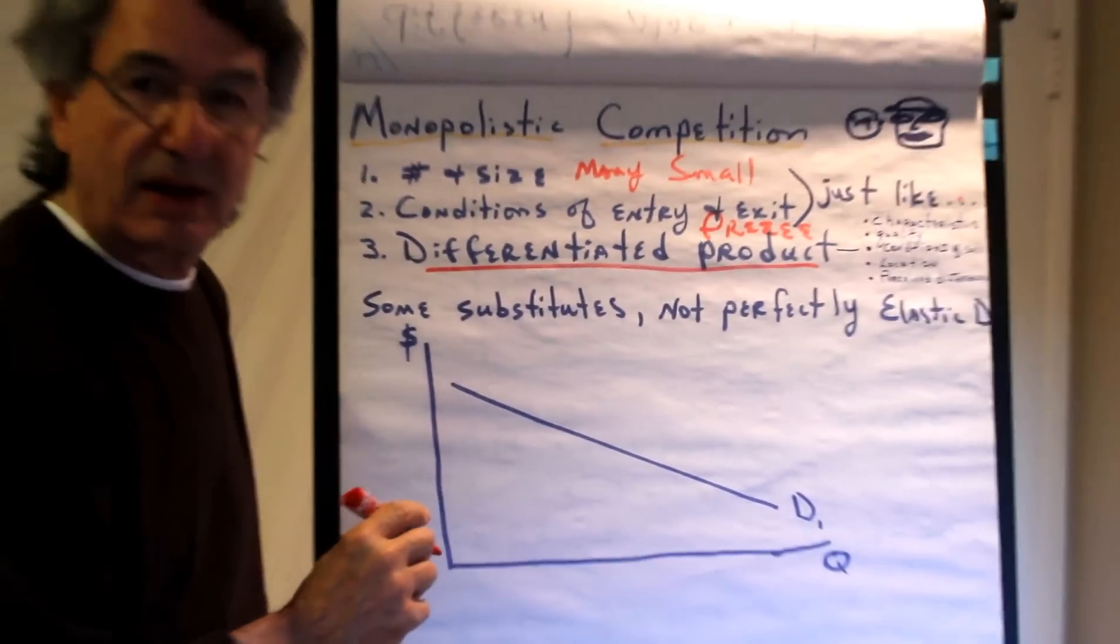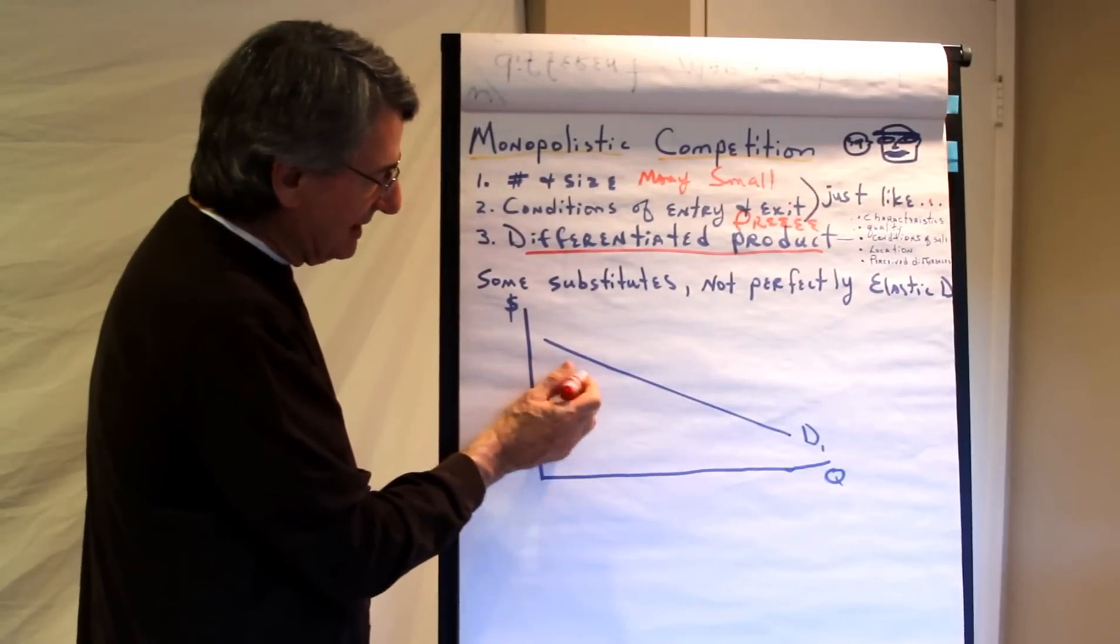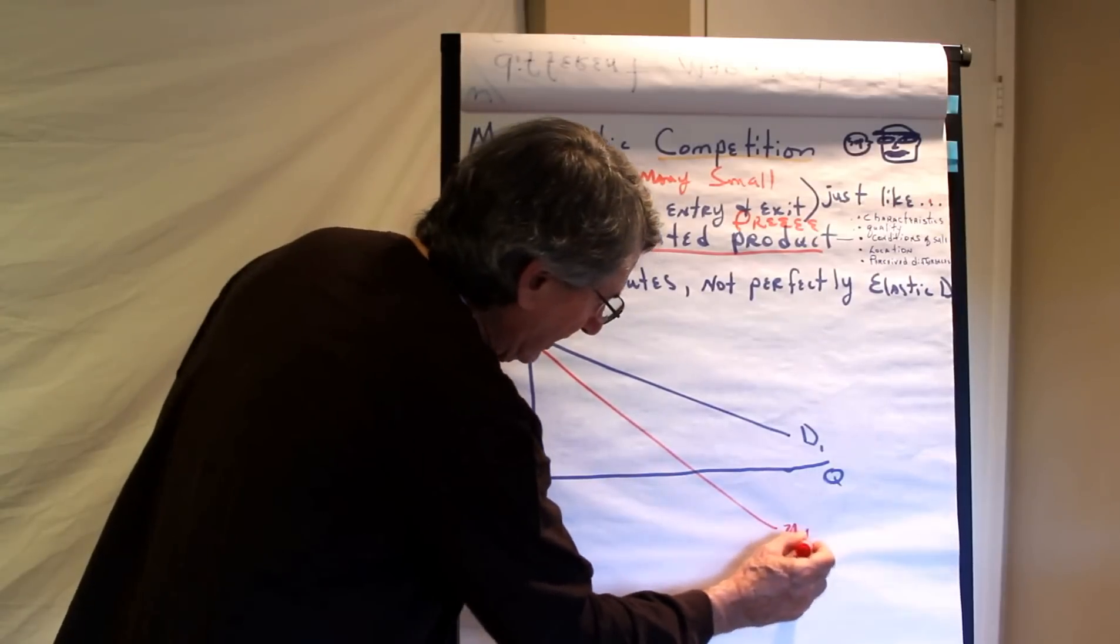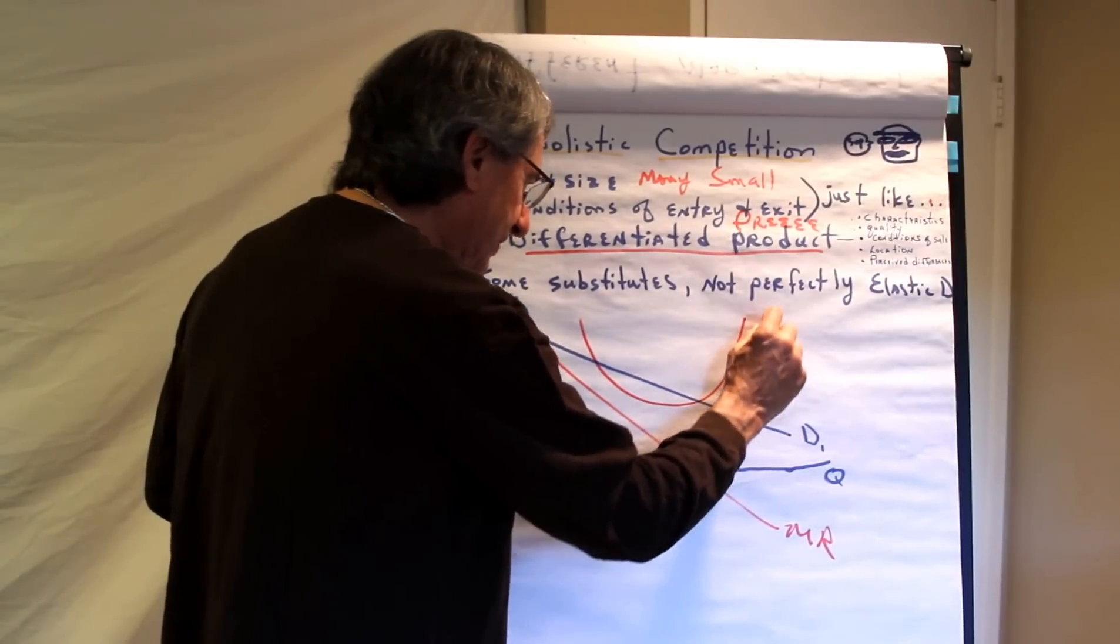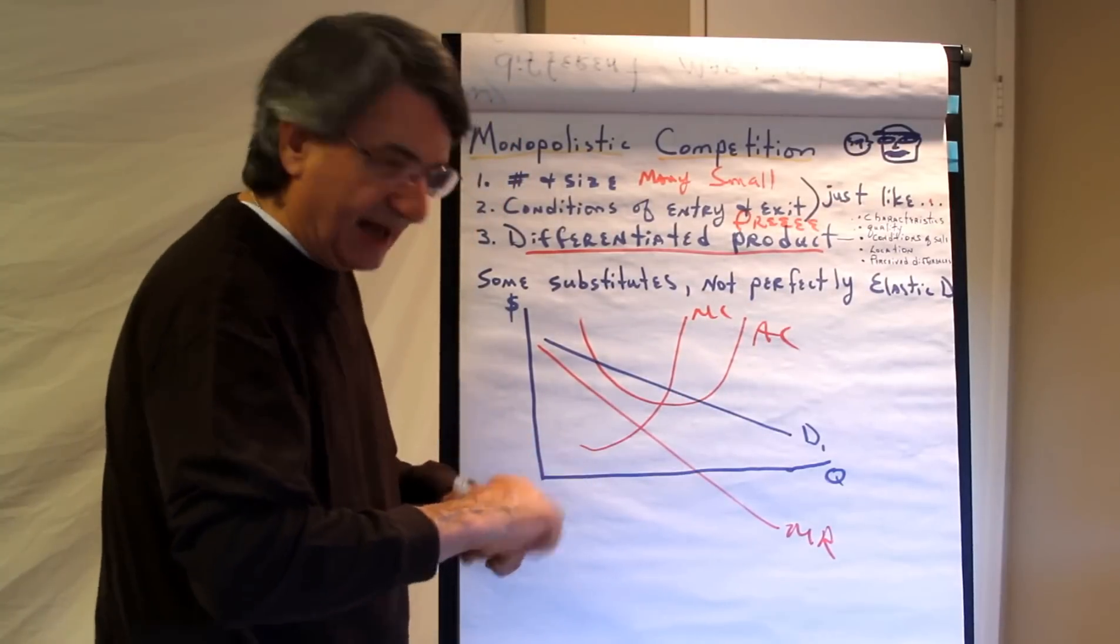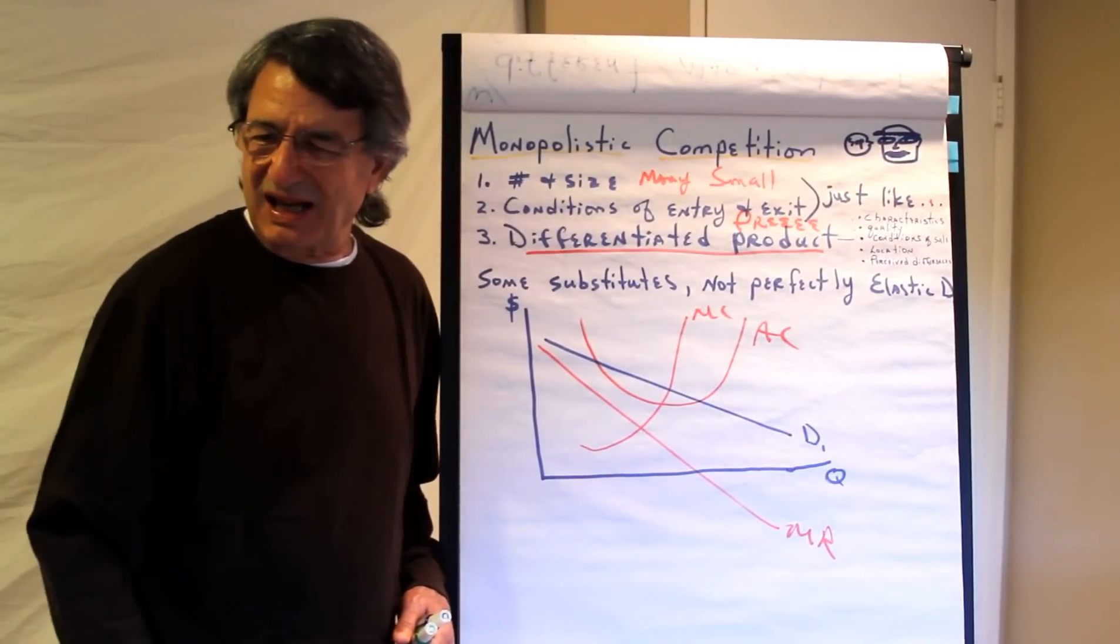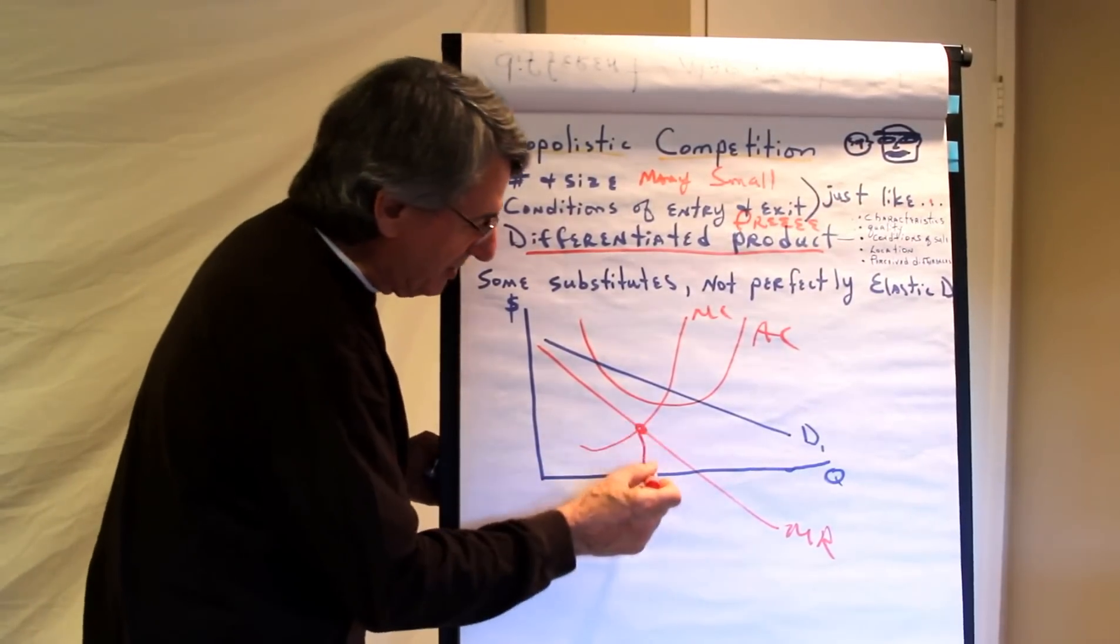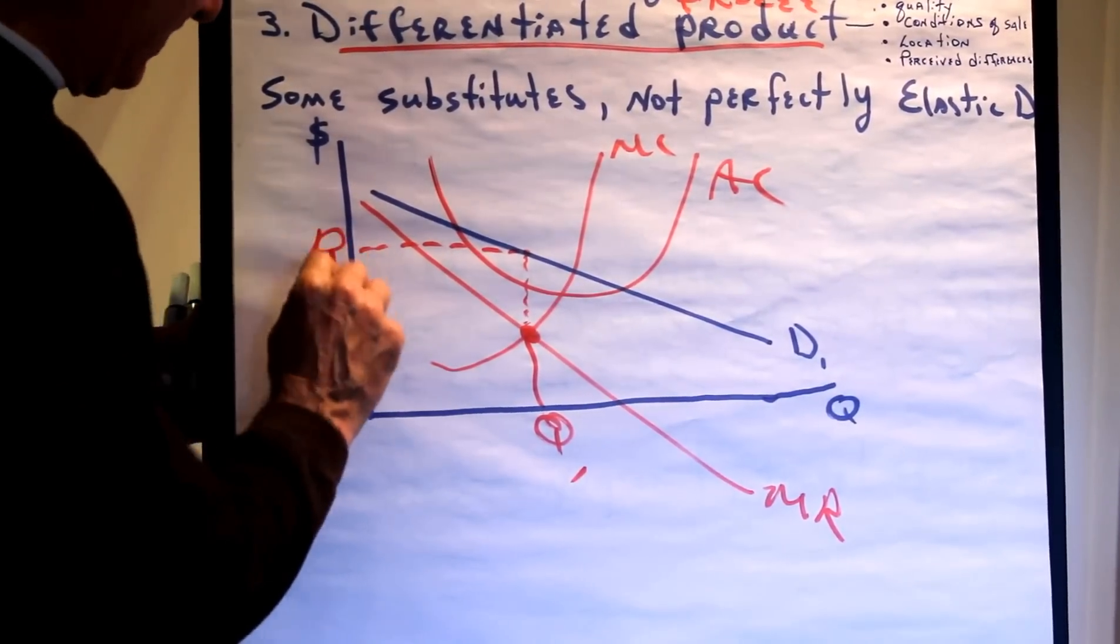So here's price and quantity determination for monopolistic competition. They face a demand curve that is quite elastic and since they're going to sell at one price to every customer, then their marginal revenue curve has twice the slope of the demand curve. So there's their marginal revenue curve. We'll give them their cost curves. There's average cost and there is marginal cost. So what quantity would they produce at? Where? Produce the quantity where? Marginal revenue equals marginal cost? That's the quantity. And then they go up to the demand curve to find out what is the price.